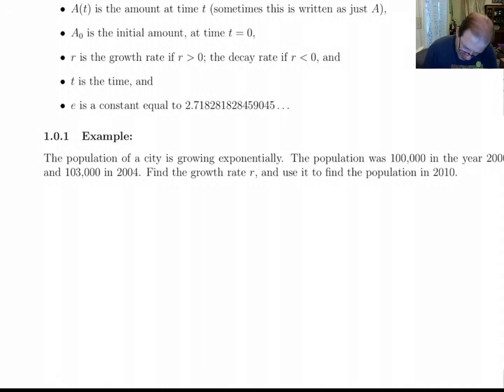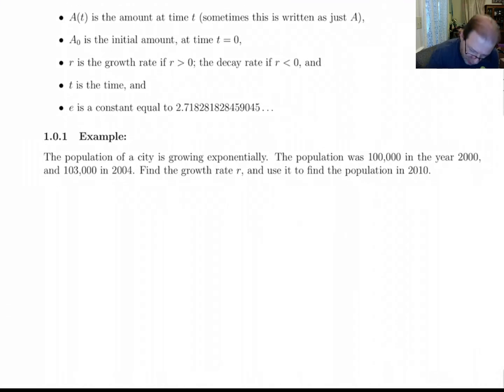Let's find the growth rate and use it to find the population in 2010. So what we want to do here is I'm going to write out all my things: A, A0, R, and T. So notice this is broken into two things. First it says find the growth rate r.